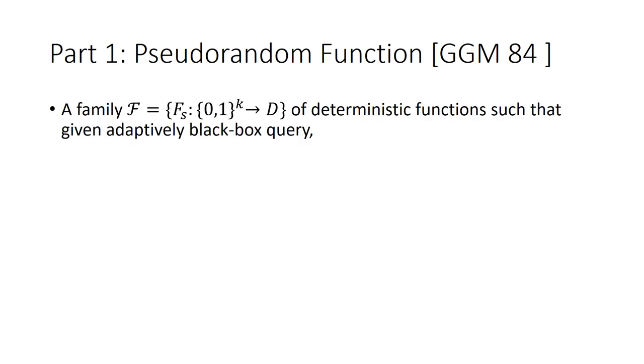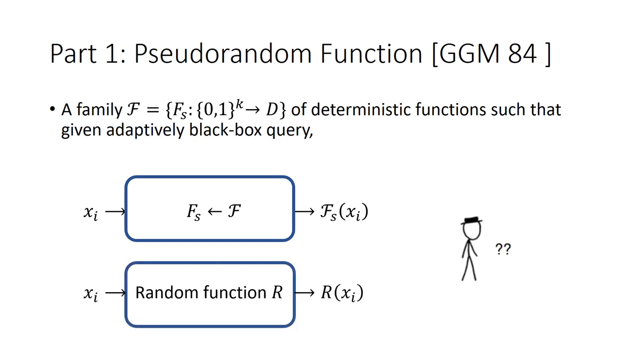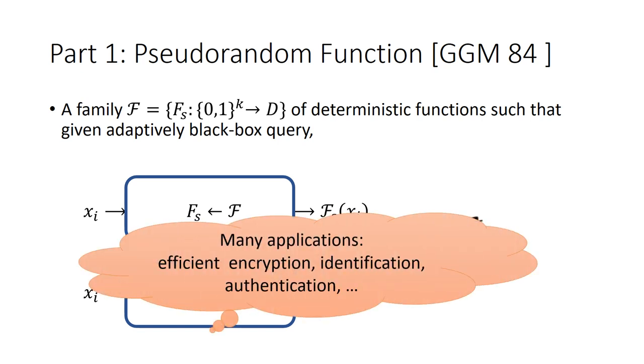Now, let us first focus on the first part of our paper, PRF. Basically, PRF is a family of deterministic functions such that, even given adaptively black-box queries, a polynomial time adversary cannot distinguish it from real random functions. Of course, PRF is quite significant and has many applications such as efficient encryption, identification, authentication, and so on.